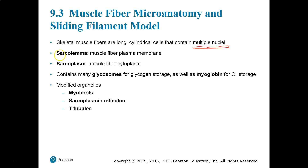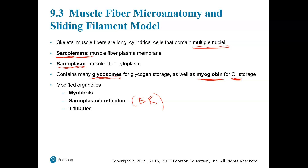The plasma membrane that surrounds a muscle fiber is called the sarcolemma. The cytoplasm of the muscle fiber is the sarcoplasm. There are glycosomes within the muscle for storing glycogen — muscle fibers remove glucose from the blood and store it as glycogen, which is long chains of glucose. Myoglobin stores oxygen in the muscle. Modified organelles include myofibrils, the sarcoplasmic reticulum (a modified endoplasmic reticulum), and T-tubules (a modification of the sarcolemma).